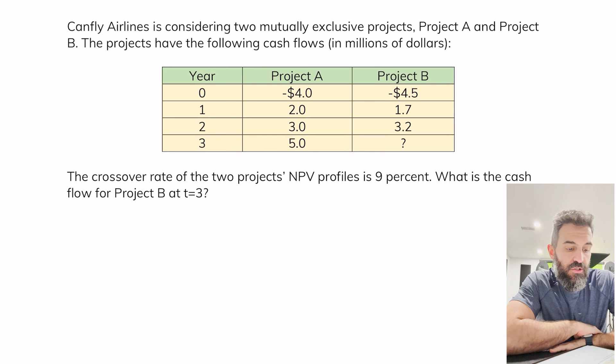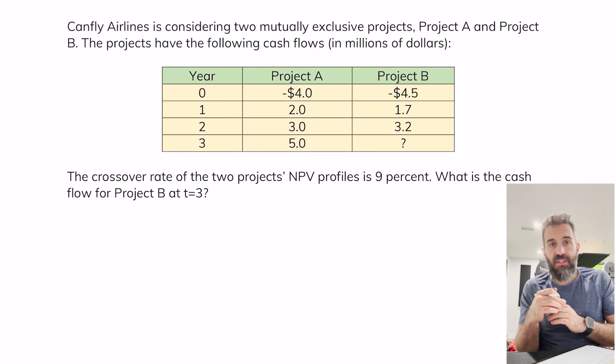Hey everyone, quick video here just solving a question that a few students asked me today and I thought it'd be nice to make a video out of it. In this question we're asked to find the missing value and you're given two projects and a crossover rate.